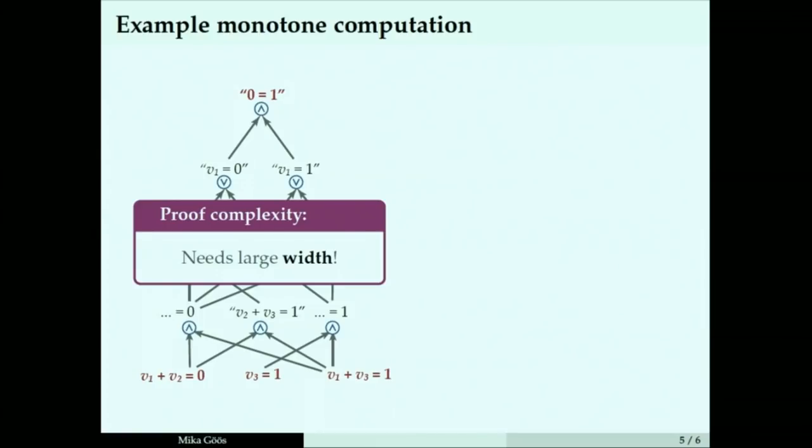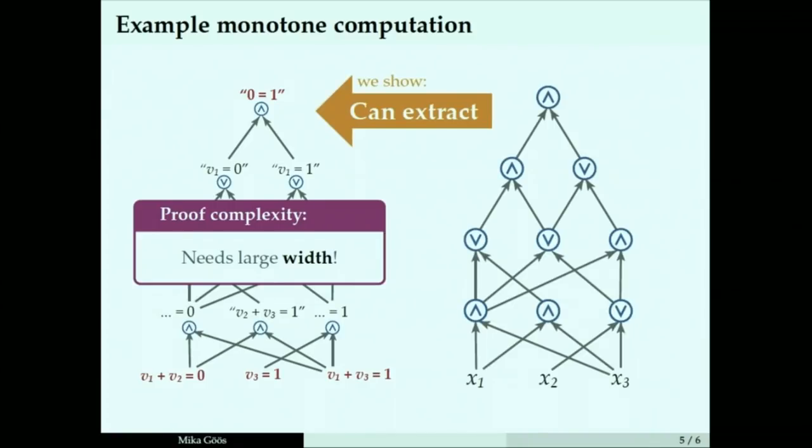This attempt failed, but the punchline is that we actually show that any monotone computation, any monotone circuit that tries to compute this function essentially needs to do this. We show, and this is the more general theorem, that you give me any monotone circuit, if it's small, I can extract from it one of these refutations of small width, which contradicts these age-old results in proof complexity. So what we really prove is a lifting theorem, a transference theorem, whereby from lower bounds in proof complexity, you can derive lower bounds for monotone circuits. It's a general black box tool.